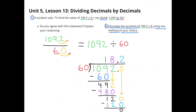I make sure I put my decimal point in, and I bring a 0 down in the tenths column. How many times does 60 go into 120? It goes in twice. 2 times 60 is 120, and the difference is 0. The answer is 18 and 2 tenths. 109 and 2 tenths divided by 6 is 18 and 2 tenths, and 1092 divided by 60 is also 18 and 2 tenths.